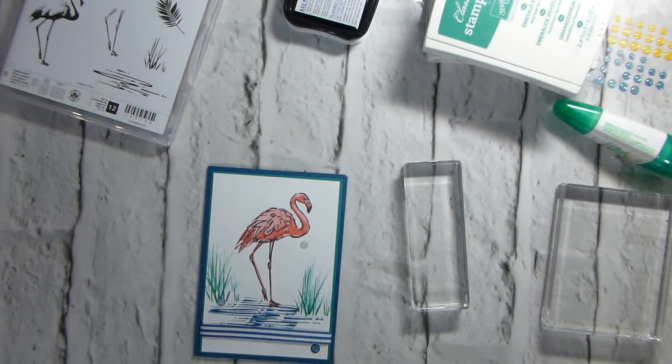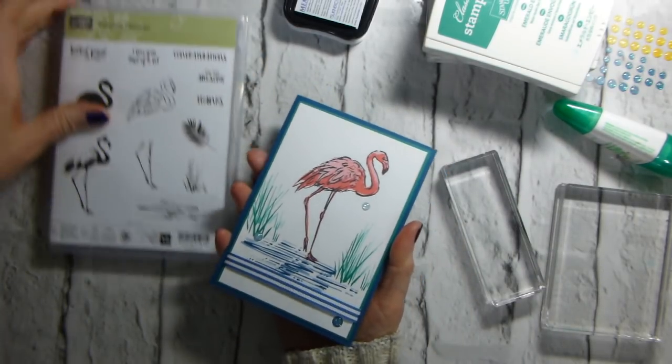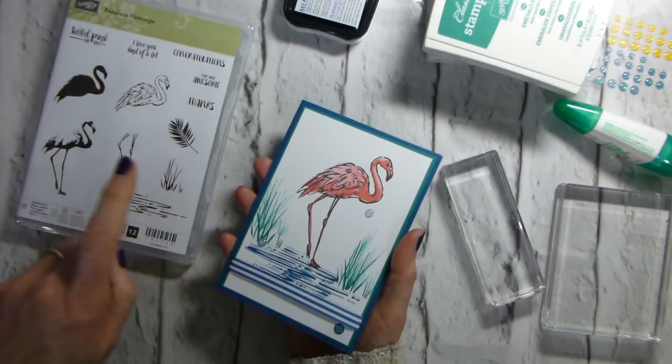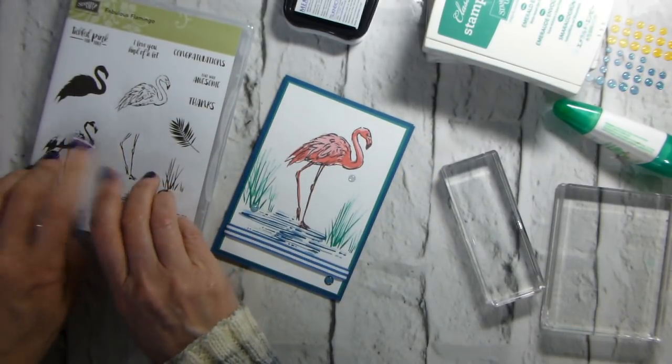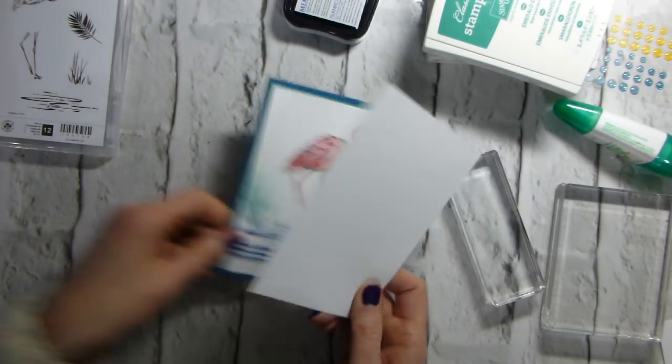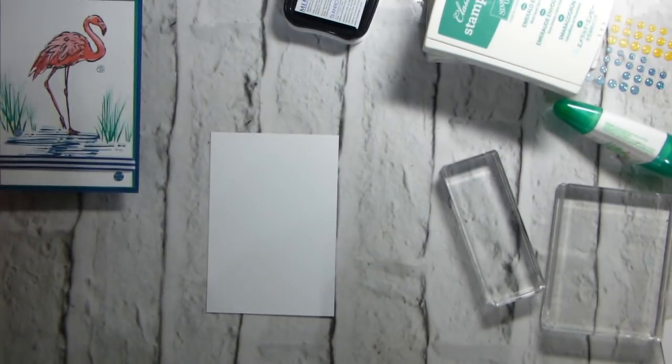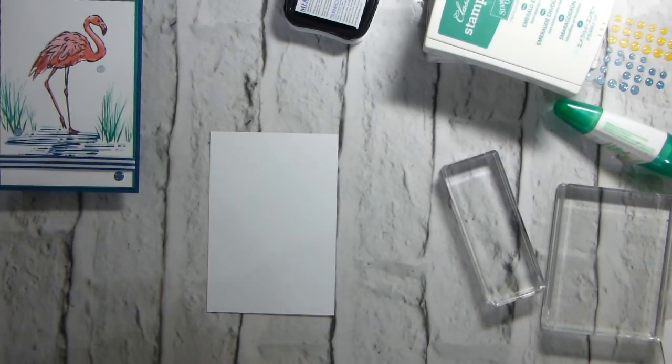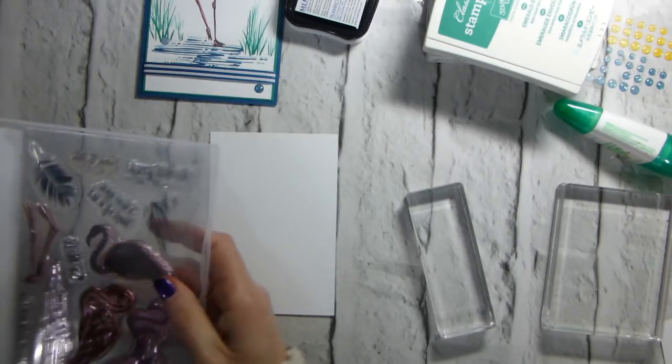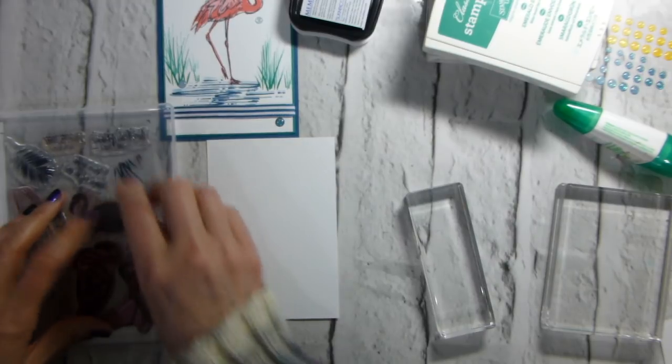This is what I've come up with. I'm using the Fabulous Flamingo stamp set, which I got free when I attended onstage in April last year in Amsterdam. I thought I would dig it out again because I haven't used it for a while. I'm going to do a slightly different colourway to this, only very slightly different, but because a flamingo is a flamingo, we're going to stick with ordinary flamingos.